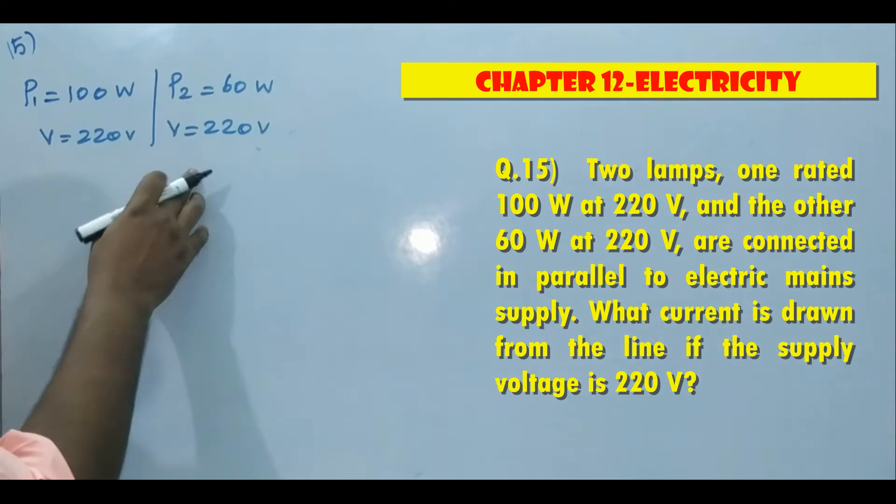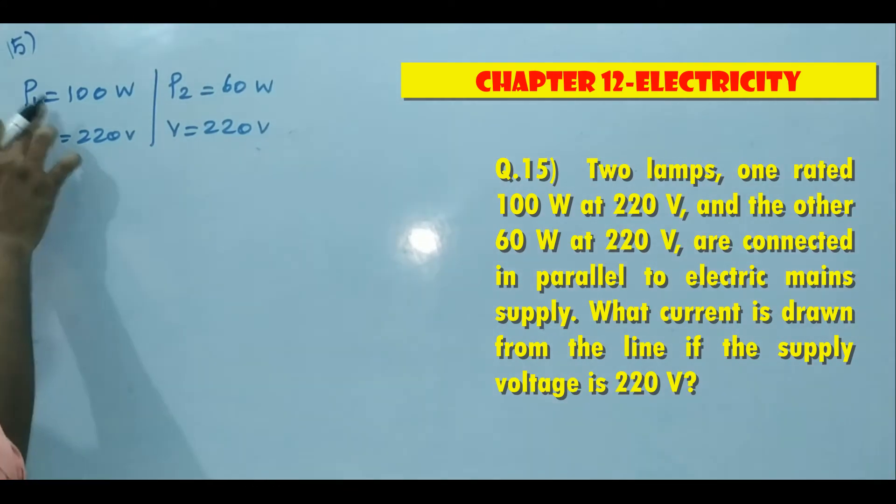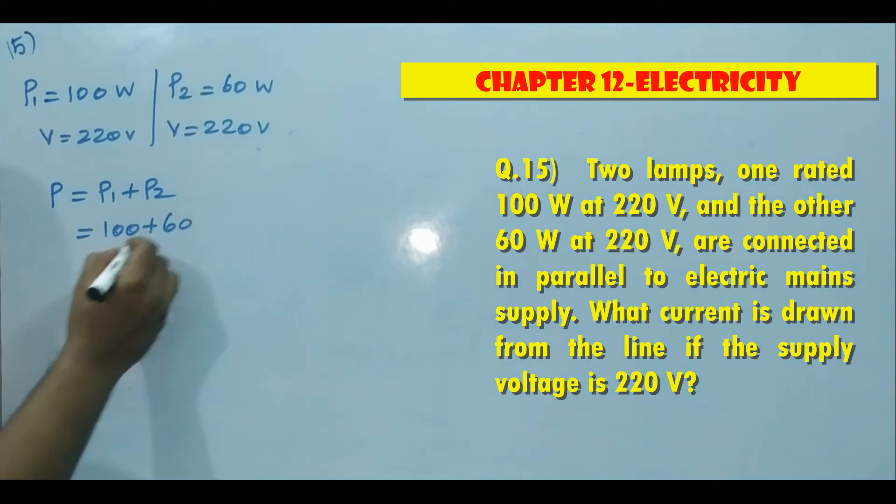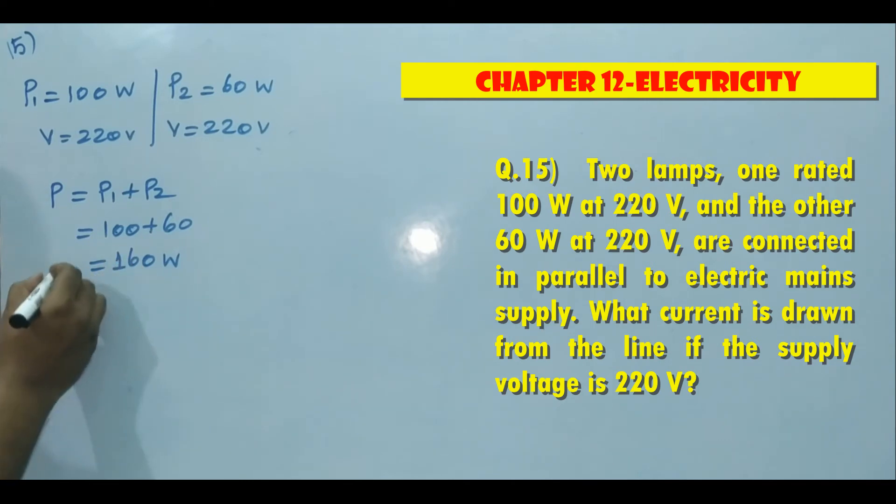If they connected in series or parallel, the total power in the circuit will be the sum of individual powers. So here two powers are there. P1 plus P2, and P1 is 100, P2 is 60, then total power is 160 watt. Now we got power value.